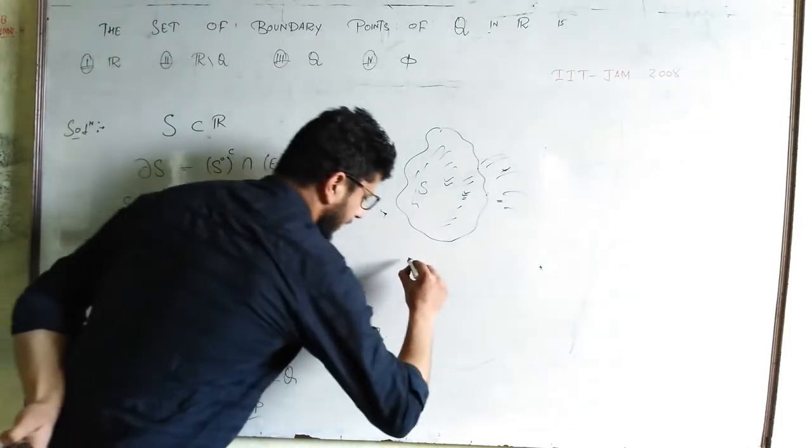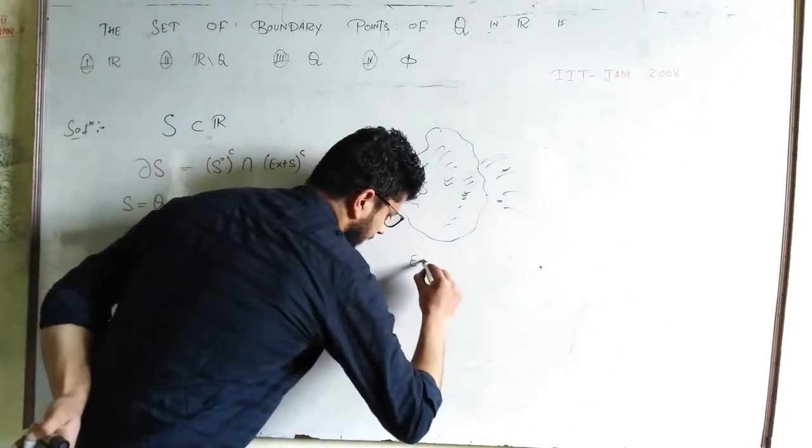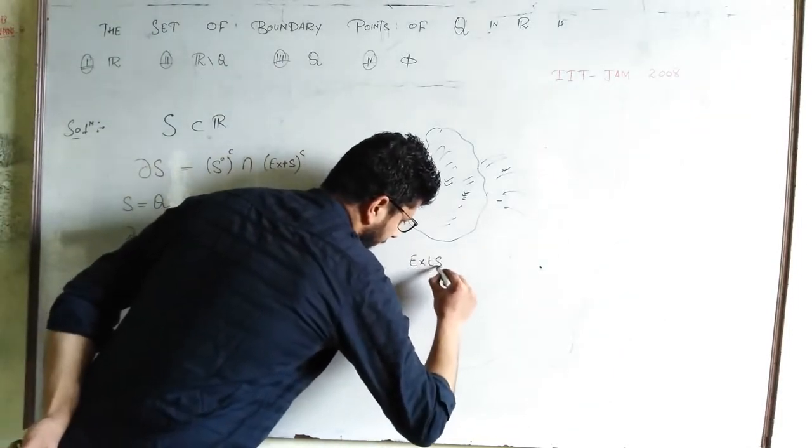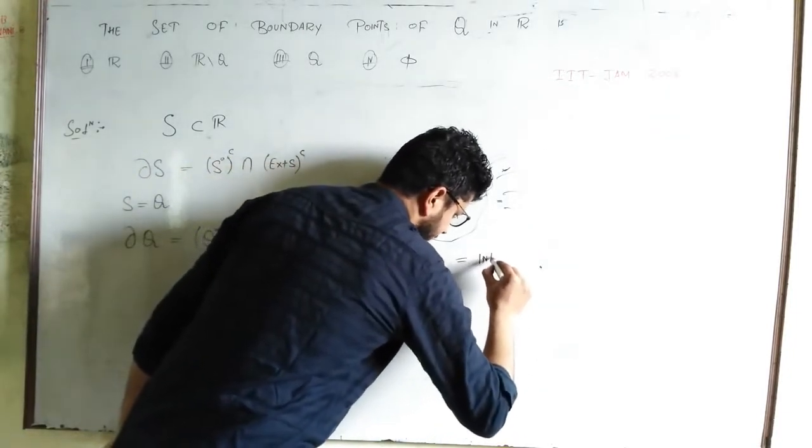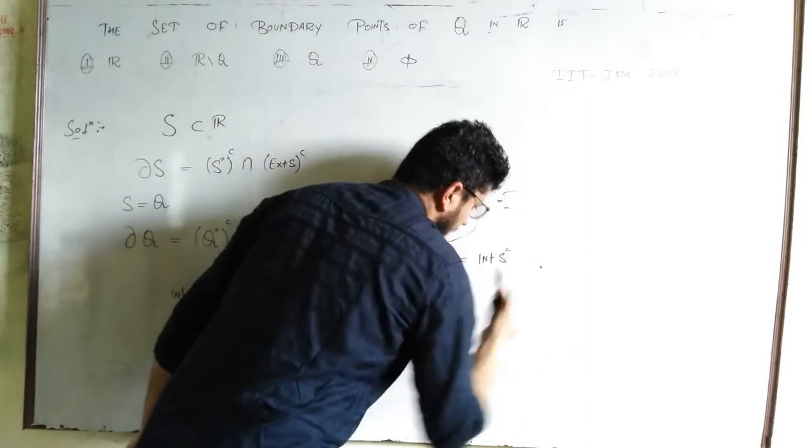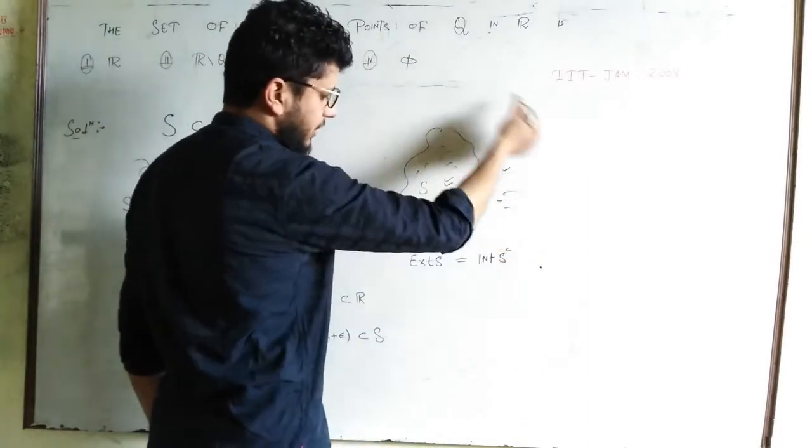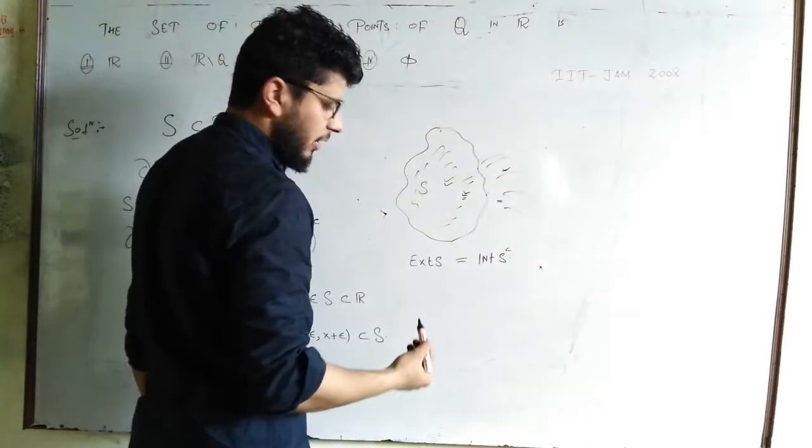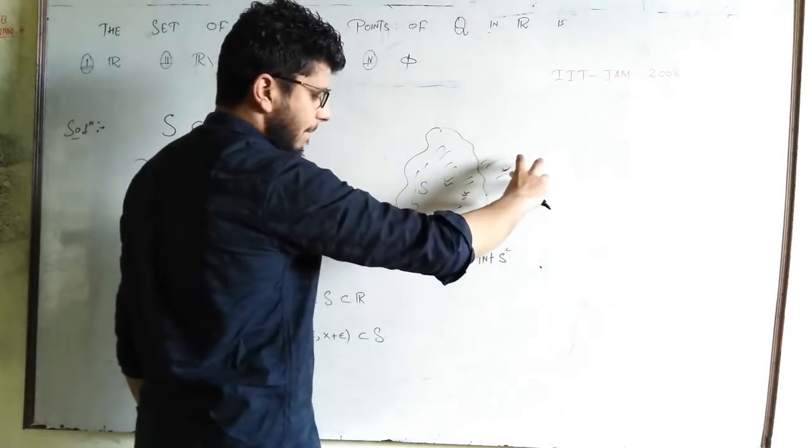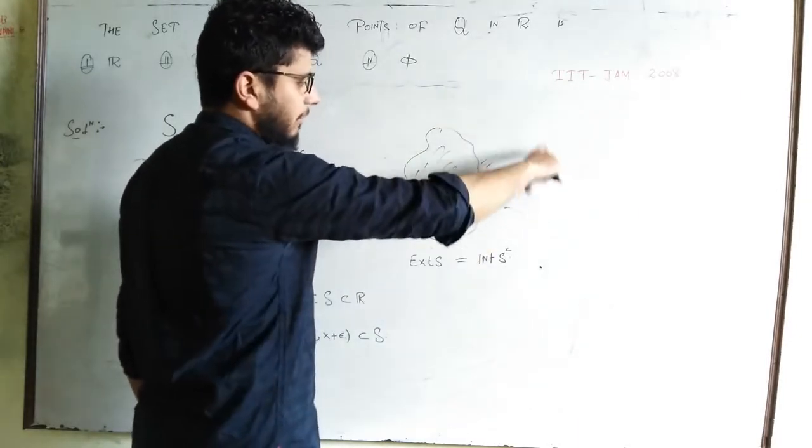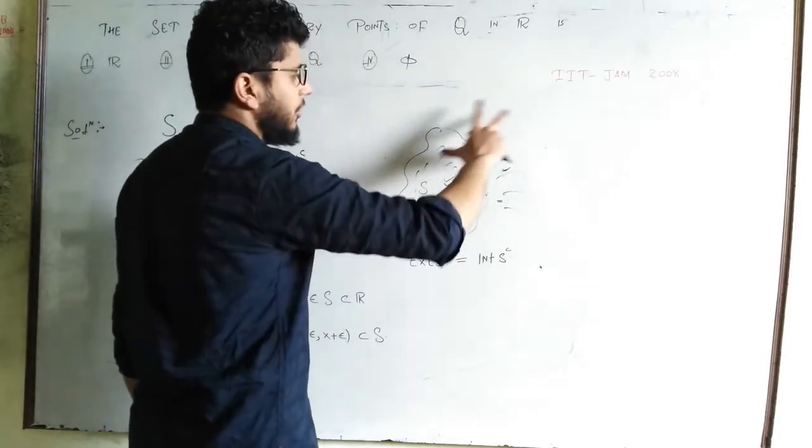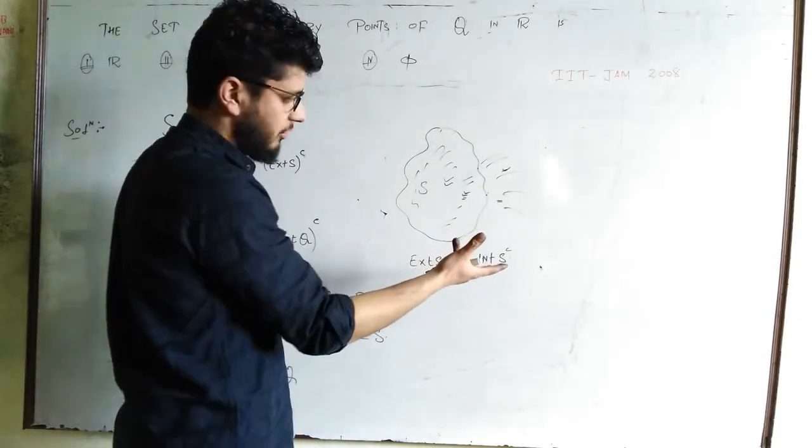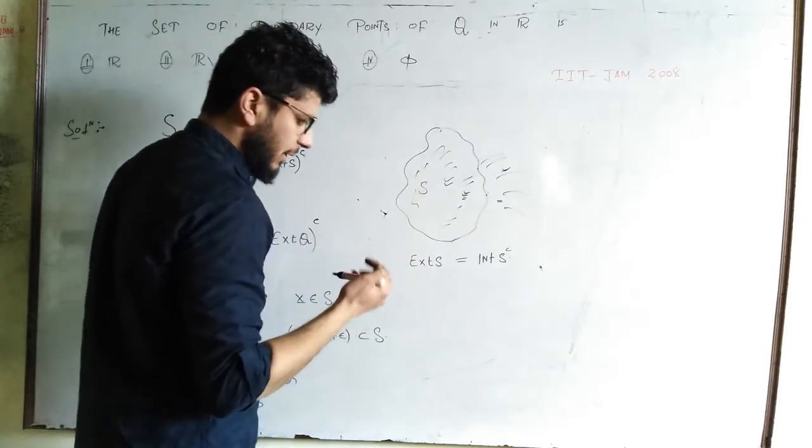Now what about exterior of S? If you are supposed to find exterior of the set S, that is actually equal to interior of S complement. If your set is somewhere outside, the exterior of that will be the complement of this S. That is the points which are outside. So you will try to find interior of S complement.